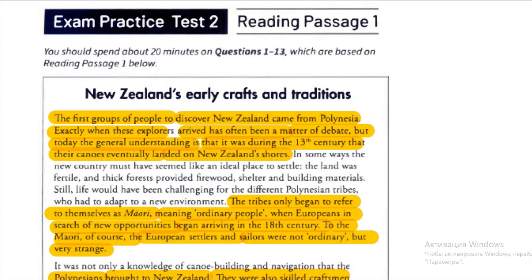Welcome to the lesson of IELTS academic reading passage 1. Today we are going to talk about the task type of True, False, and Not Given. Please do not confuse with Yes, No, and Not Given. I'm going to give you some tips and an action plan for True, False, and Not Given, with additional tips and information.